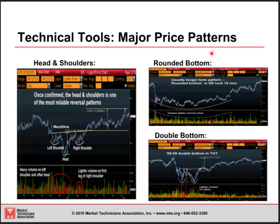Rounded bottom — this is usually a longer-term pattern, shown here in a quick chart of GE. What you see is a move that heads down relatively sharply, but then takes much longer periods of time to get to lower lows, and finally starts making higher lows. For a rounded top, you'd see a quick sharp move up and then a much longer period of time to get to higher highs, finally reversing and rolling over with slightly lower highs. Volume mirrors price — a lot of volume on the sharp entry into the rounded bottom, then declining volume as price declines, and volume picking up as investor interest returns, finally confirming with a higher-volume move out of the rounded bottom.